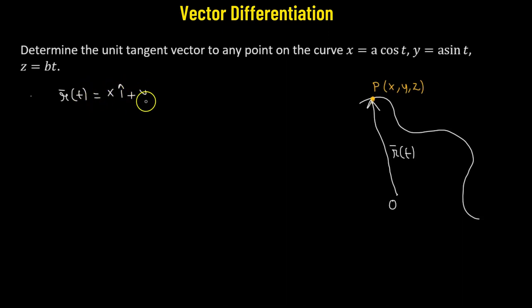plus y j cap plus z k cap. The x, y, z values are given as x = a cos(t), the x component, y = a sin(t), the y component times j cap, and z = bt, the z component times k cap. This is the position vector r of that particular point on the curve at any given instant of time.